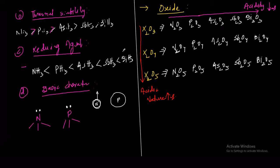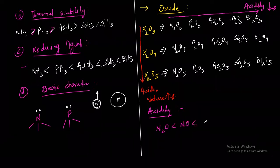There are important facts about nitrogen oxides. The order of acidity of nitrogen oxides from minimum to maximum is: N₂O, NO, N₂O₃, N₂O₄, N₂O₅ — with N₂O₅ having the maximum acidic nature.